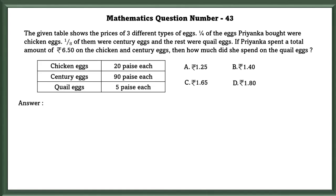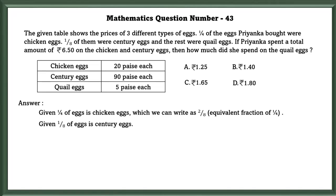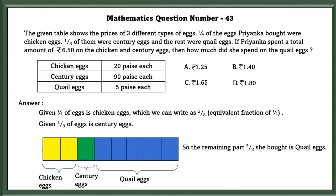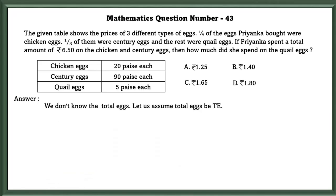Mathematics question number 43. The given table shows the prices of 3 types of eggs. 1/4 of the eggs Priyanka bought were chicken eggs. 1/8 of them were century eggs and the rest were quail eggs. If she spent a total of 6.50 rupees on the chicken eggs and century eggs, then how much did she spend on the quail eggs? Given 1/4 of the eggs is chicken eggs, we can write it as 2/8, equivalent fraction of 1/4. Given 1/8 of eggs is century eggs. So 2/8 of them are chicken eggs, 1/8 is century eggs, and the rest are quail eggs. So the remaining part, 5/8 she bought is quail eggs. We don't know the total eggs. Let's assume the total eggs to be TE.